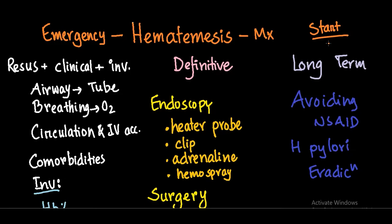Resuscitation is ABC — airway, breathing, circulation. Maintain the airway by endotracheal intubation if the patient has massive hematemesis. If the patient is hypoxic or in shock, give oxygen.